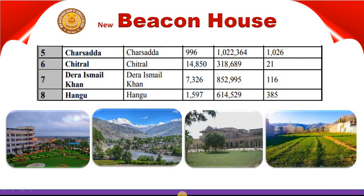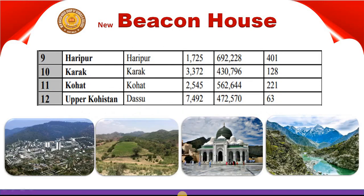The eighth district is Hangu. Its headquarter is also in Hangu. It has an area of about 1,597 km², a population of 614,229 according to 1998 figures, and a density of 385 people per km². The ninth district is Haripur. Its headquarter is also in Haripur. It has an area of 1,725 km², a population of 692,228, and a density of 401 people per km².